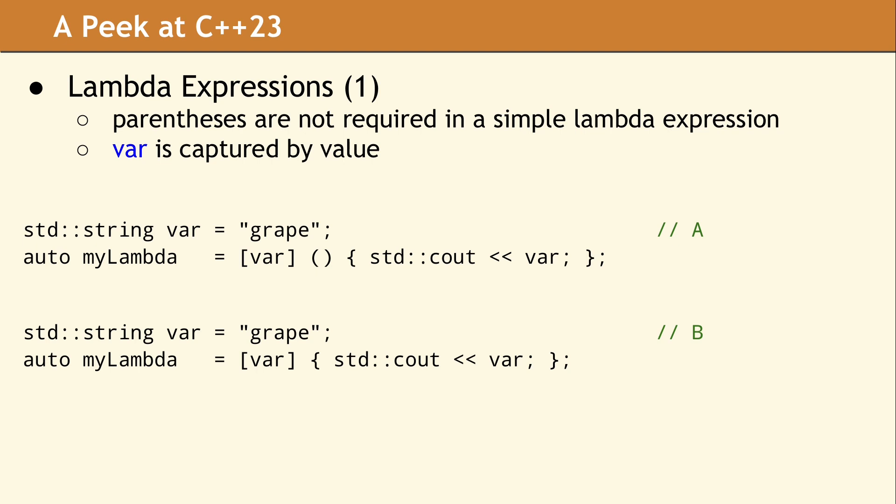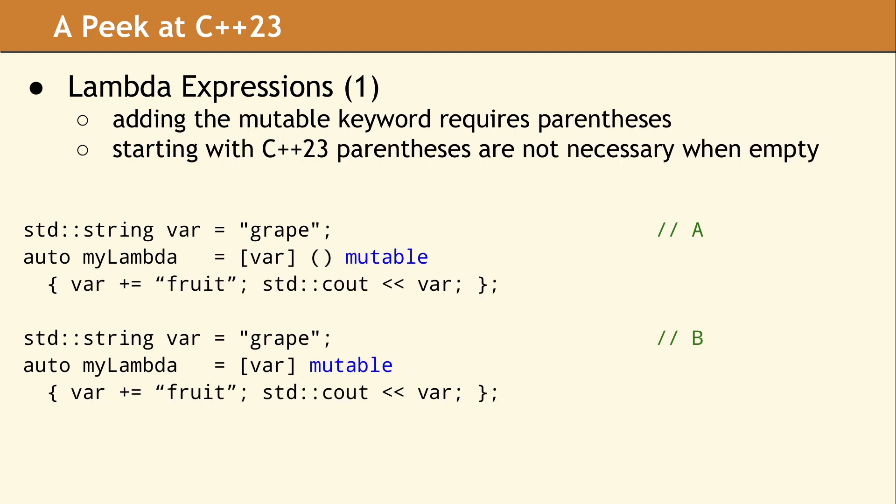Looking at either lambda expression, var is captured by value. The contents of this string will be copied when the lambda expression is evaluated. Capturing this variable by value creates a new string which is const qualified. This is not a problem for the current example since all we are doing with the captured variable is printing its value. So what happens when the body of the lambda expression needs to modify the captured variable? Assuming we do not want to change the original variable, we need to mark the lambda expression with the mutable keyword. The syntax shown in example A has been valid since C++11. Example B shows the same expression with the empty parentheses removed. Prior to C++23, example B results in a compiler error indicating a syntax problem.